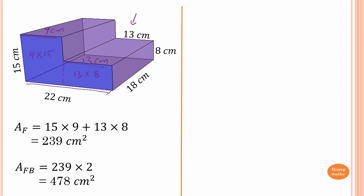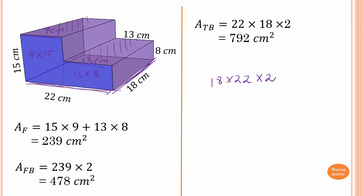Now for the top and base: the top panel and base panel are the same area, which is 22 times 18. Since they are equal, we multiply by 2. Therefore the area of the top and base is 22 times 18 times 2, which gives 792 square centimeters.